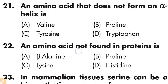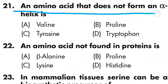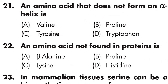Question number twenty-one: an amino acid that does not form an alpha helix is — Option A is valine, Option B is proline, Option C is tyrosine, Option D is tryptophan. Option B is correct — proline is an amino acid that does not form an alpha helix.